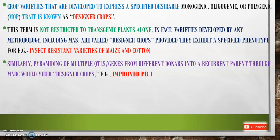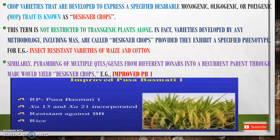A well-known example is the variety Improved Pusa Basmati 1. In this variety, the recurrent parent is Pusa Basmati 1, and two genes are incorporated — xa13 and xa21 — where 'xa' refers to Xanthomonas, the causal organism of bacterial leaf blight, from which this gene code is derived. In India, marker-assisted selection (MAS) products with Improved Pusa Basmati 1 and Improved Samba Masuri carrying bacterial leaf blight resistant genes were released for cultivation.